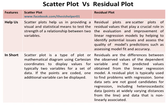In short, Scatter Plot is a type of plot or mathematical diagram using Cartesian coordinates to display values for typically two variables for a set of data. If the points are coded, one additional variable can be displayed.